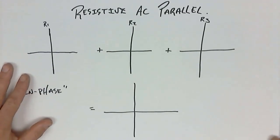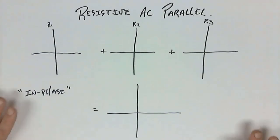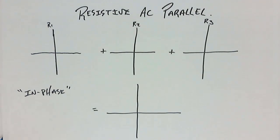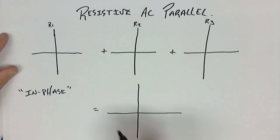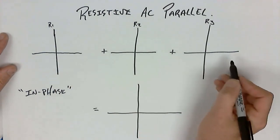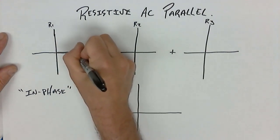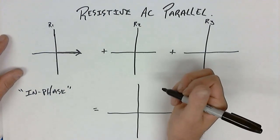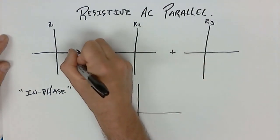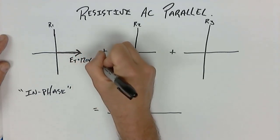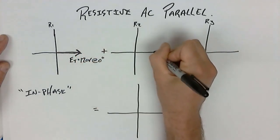Now let's see how this differs when we go to a phasor diagram. This is a resistive AC parallel phasor diagram. In a phasor diagram, items must be sketched in relation to a reference. What is the same in a parallel circuit is the voltage — the voltage is the same. That means the voltage must be sketched on the zero-degree reference line, so E total is 120 volts at zero degrees.